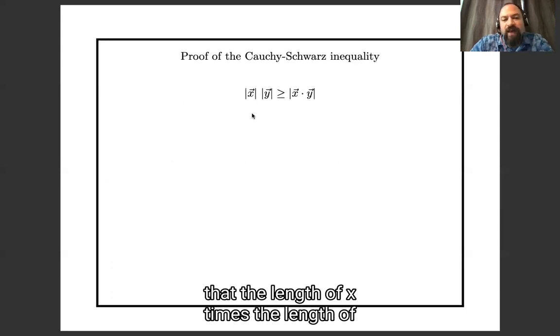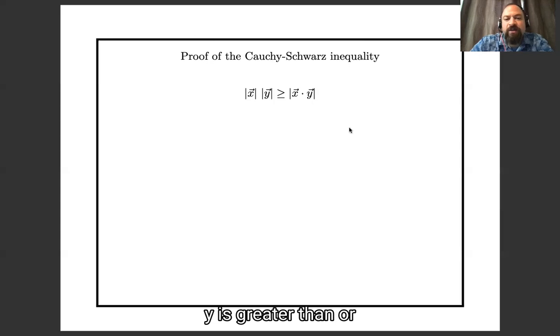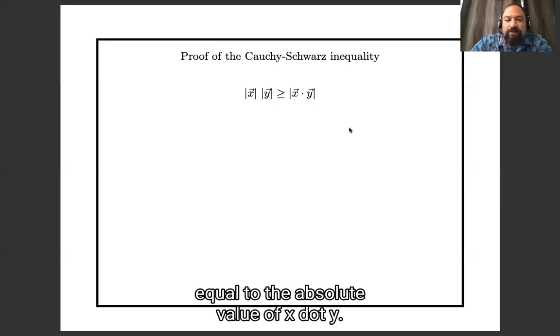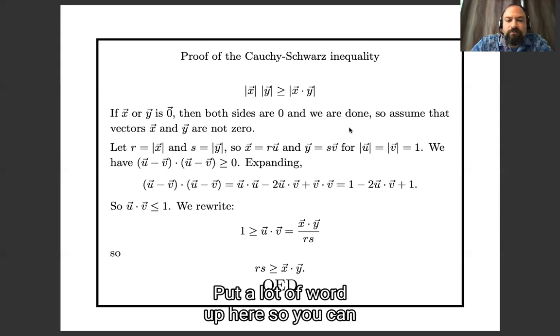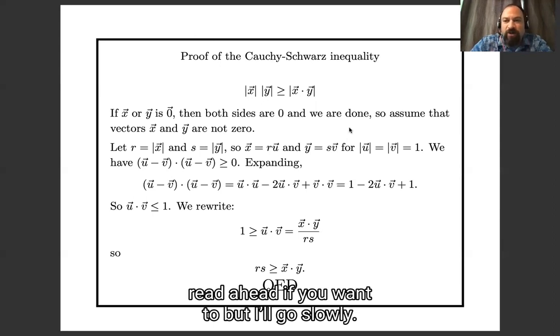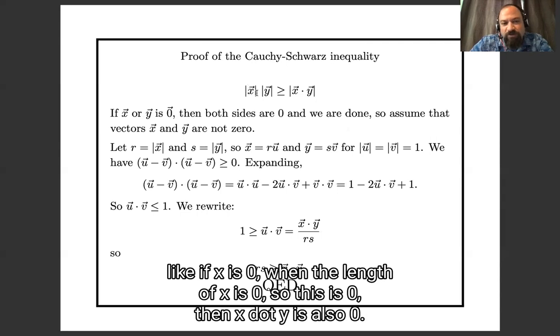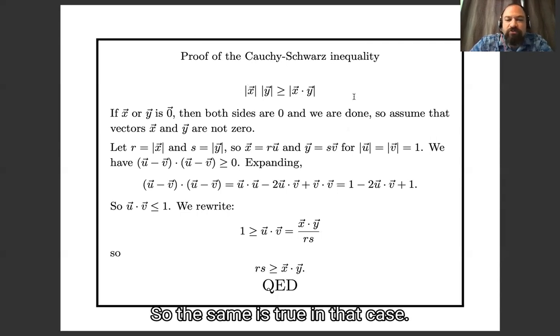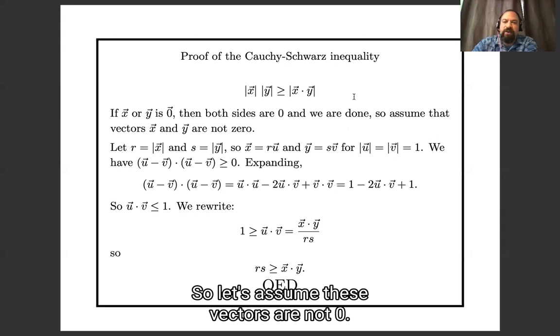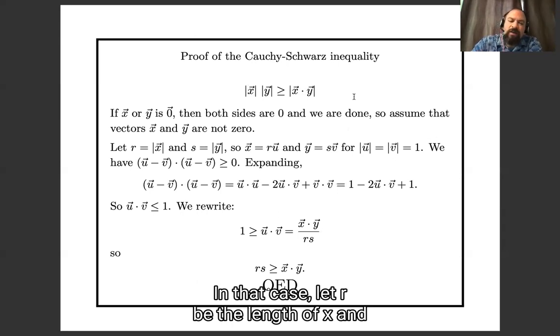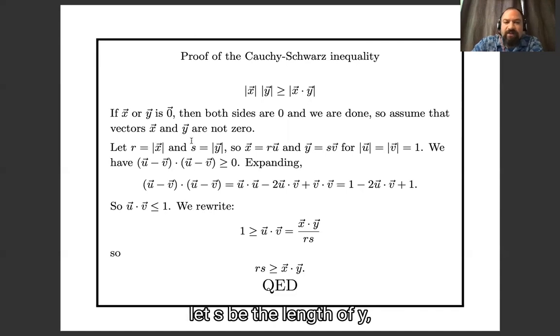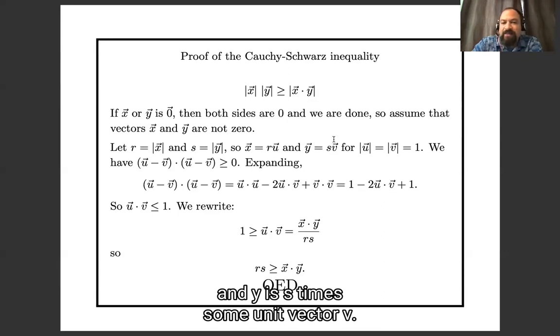Okay, so we want to prove that the length of x times the length of y is greater or equal to the absolute value of x dot y. I've put a lot of words up here so that you can read ahead if you want to, but I'll go slowly. If x or y is zero, then both sides are zero. Like if x is zero, then length of x is zero, so this is zero. And x dot y is also zero, so this statement is true in that case. So let's assume these vectors are not zero. In that case, let r be the length of x and let s be the length of y, which means that x is r times some unit vector u and y is s times some unit vector v.